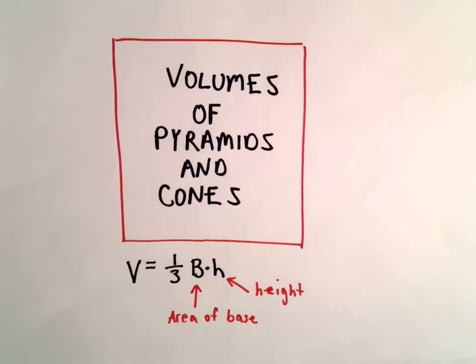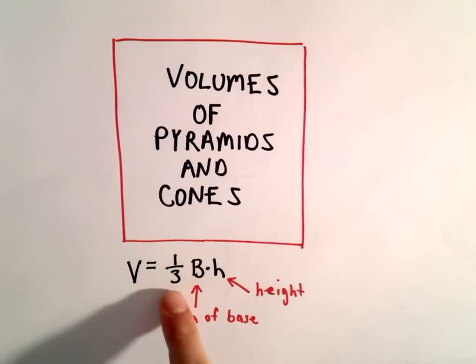Okay, here we're going to look at an example of finding the volume of a pyramid. The formula to find the volume of a pyramid or a cone says the volume equals one-third the base times the height.